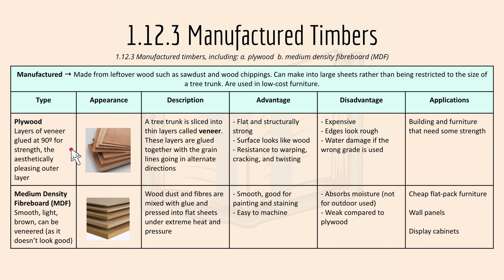Plywood consists of layers of veneer glued at 90 degrees for strength and an aesthetically pleasing outer layer. A tree trunk is sliced into thin layers called veneer, and these layers are glued together at 90 degrees so that the grain lines go in alternate directions to provide stability. The advantage is it's flat, structurally strong, its surface looks like wood, and it's resistant to warping, cracking, and twisting. The disadvantage is it's expensive, the edges look rough, and it can suffer water damage if the wrong grade is used. Applications include building and furniture that needs strength.